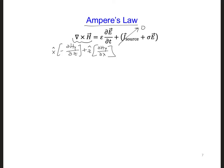Separately writing the x- and z-hat terms of Ampere's Law, I'm going to start with the z-hat term. I'm going to do dhy dx is equal to epsilon dE z dt plus sigma ez.